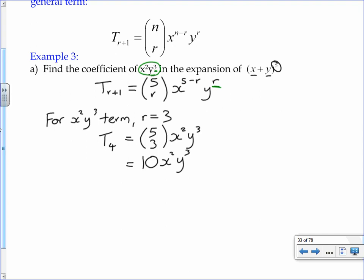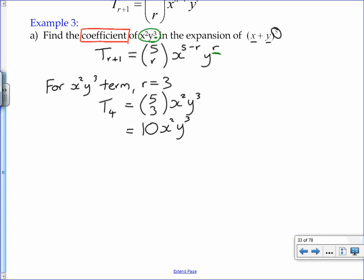And just as a matter of interpretation here, the question says find the coefficient. So you would be expected to actually make a conclusion to say that the coefficient of the x squared y cubed term is 10, which shows that you're paying attention.